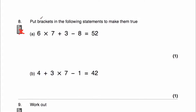Question 8a: put brackets in 6 multiplied by 7 plus 3 take away 8 to equal 52. Without brackets, we'd get 6 times 7 is 42, plus 3 is 45, take away 8 is 37 — too small. If we bracket (7 plus 3), that gives 10; 6 times 10 is 60, take away 8 is 52. So brackets go around the 7 plus 3.